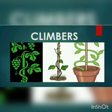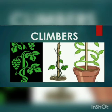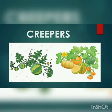Number 4, climbers. Plants that need support to stand — they have weak stems — these plants are called climbers, like money plant, grapevine etc. Number 5, creepers. Plants that creep or grow by spreading their stems or branches on the ground, like pumpkin and watermelon, are called creepers.